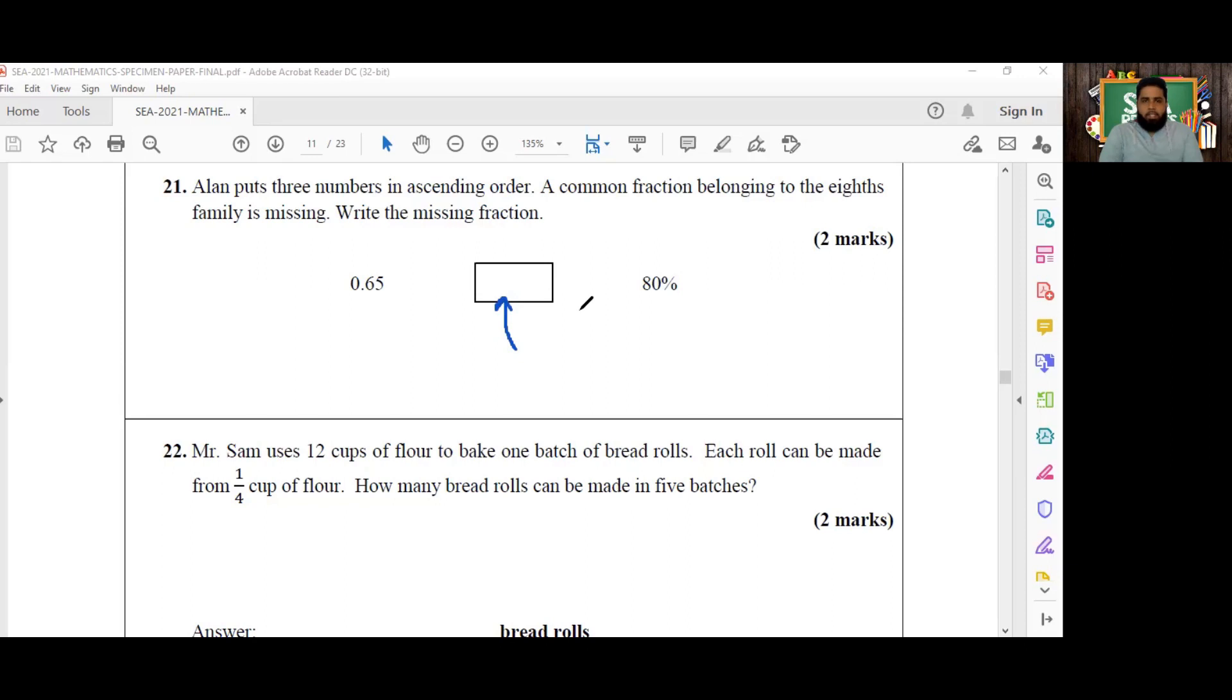One strategy that you can use for this particular question - percentages are very nice to work with. So we have one of the numbers already given as a percentage, which is 80%. Now 0.65 is really 65 hundredths, or 65 over 100, which is the same as 65%. So we want to know which common fraction belonging to the eighths family is going to fall in between 65% and 80%.